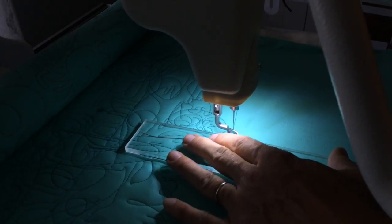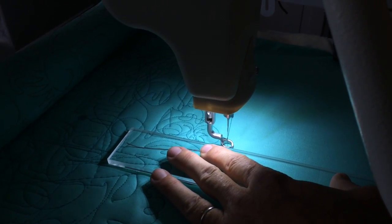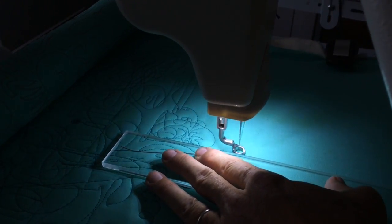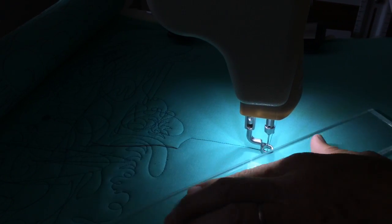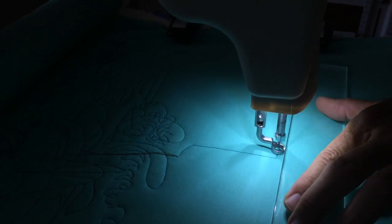Place your ruler up along the edge of the hopping foot. Most longarm machines have a lip that allow you to use a ruler. The Block Rocket is no exception.